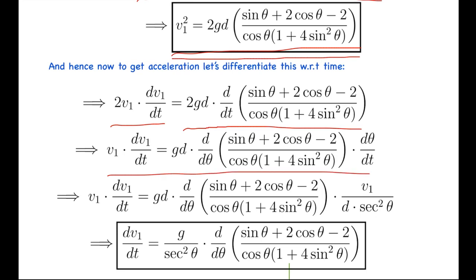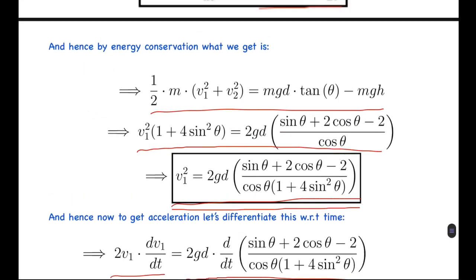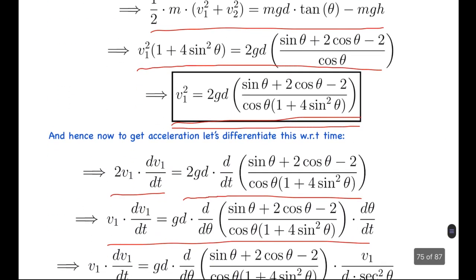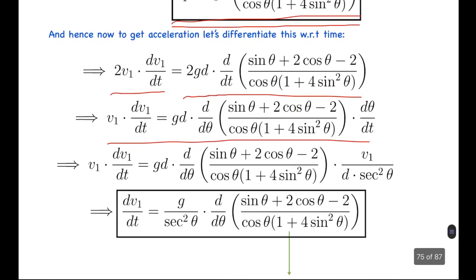The 2 cancels out. From earlier, dθ/dt can be written in terms of v₁, d, and θ as v₁/(d sec² θ). Substituting that here, v₁ cancels out and we get the value of dv₁/dt, which is acceleration, to be g/sec² θ times the derivative of this function.